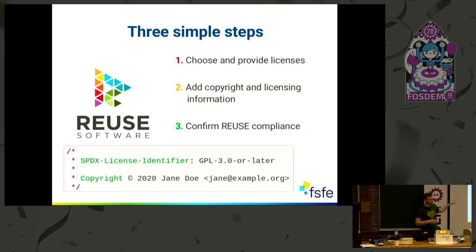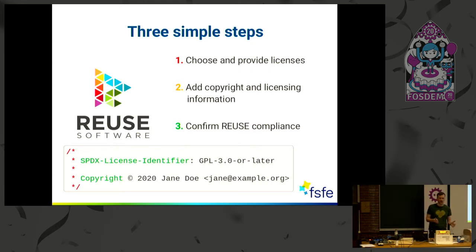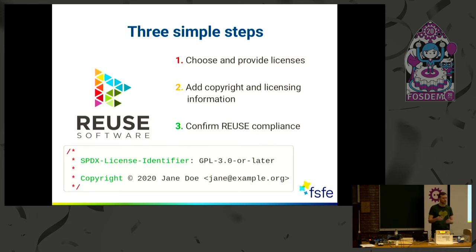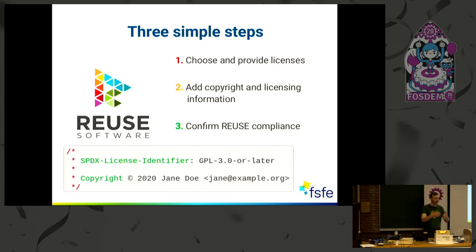This is one example of how this could look like. This is a comment header you could store in the file — it has just two lines. The first is the SPDX license identifier, a unique identifier for the license you've chosen. The second is the copyright — who is the copyright holder of the file. That's the most important information you need to give out when you release free software.